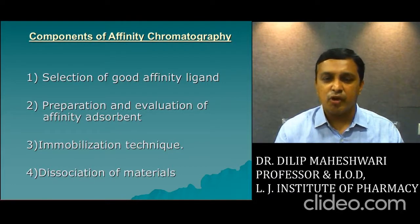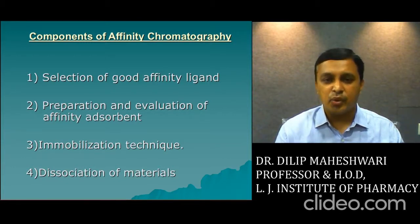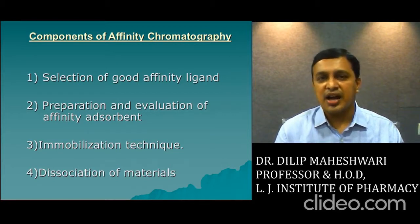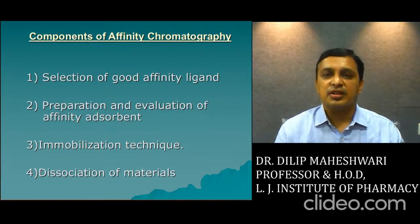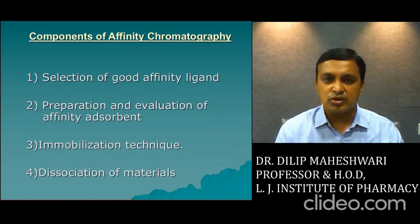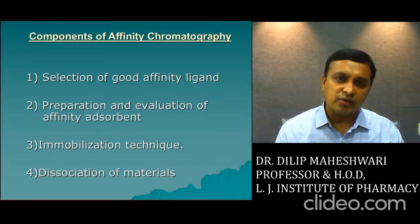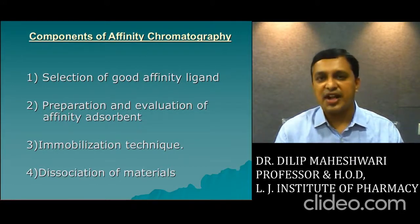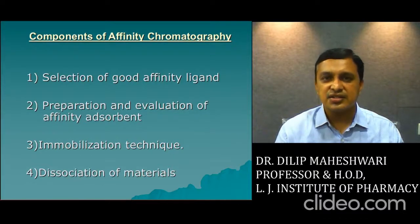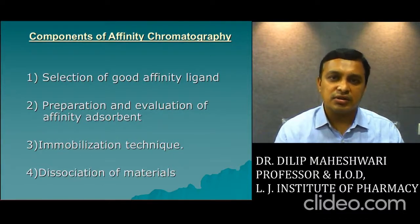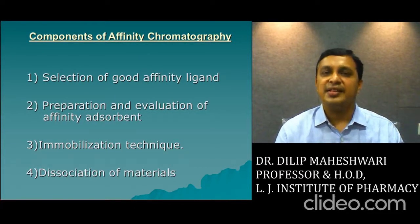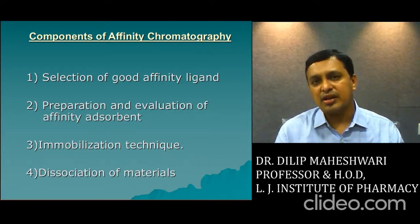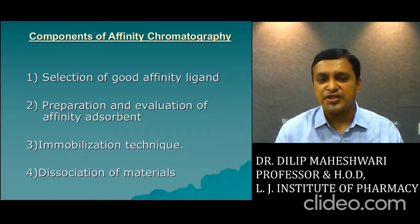The second step is preparation and evaluation of the affinity adsorbent. After selection of ligands, you have to prepare them in a proper solvent. Materials used for the stationary phase include agarose, different types of gels, Sephadex, polyacrylamide materials, and glass beads. Sometimes soft gels are used that can swell to a thousand times their original physical volume. You have to prepare in the proper solvent and then introduce into the column to get proper results.